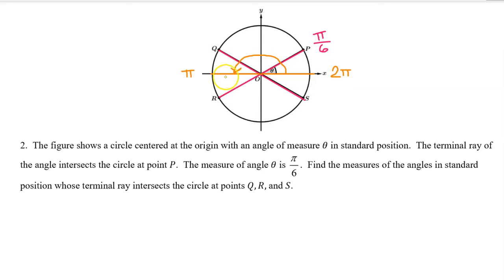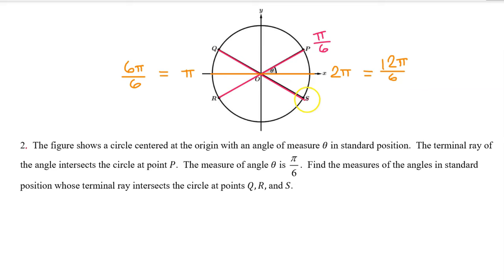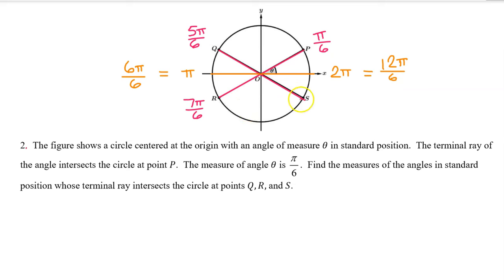On problem number 1, we saw that an angle whose terminal ray is the negative x-axis had a radian measure of pi. And an angle whose terminal ray goes all the way around and back to the positive x-axis had a radian measure of 2pi. Since we are looking for these multiples of pi over 6, the key is to think of pi as 6pi over 6 and to think of 2pi as 12pi over 6. Therefore the angle that ends at Q is one multiple before 6pi over 6, so it is at 5pi over 6. The angle at R is one multiple after 6pi over 6, so R is at 7pi over 6. And the angle that ends at S is one multiple before 12pi over 6 — it's at 11pi over 6.